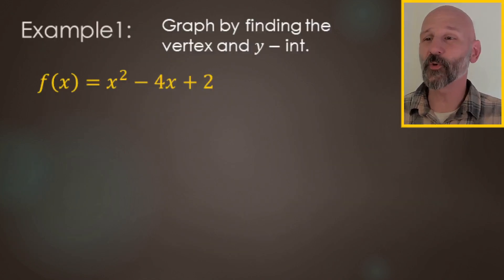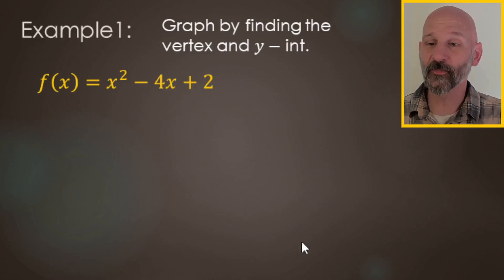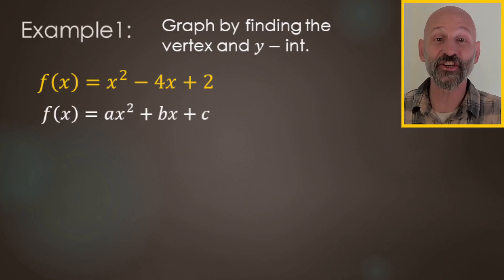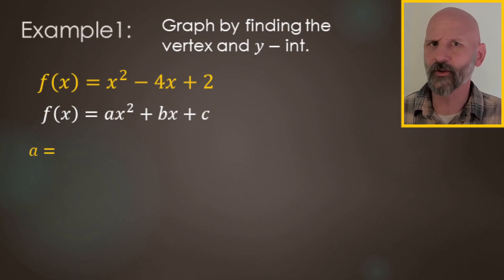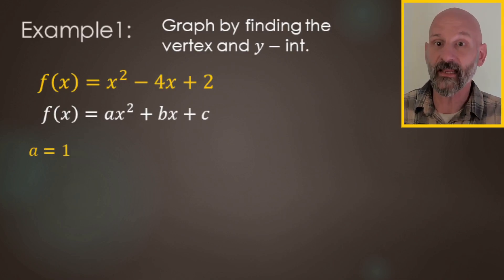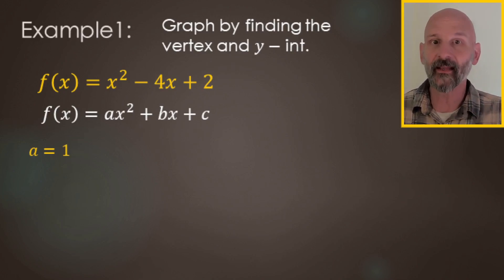Now let's get into some graphing. We have f(x) = x² − 4x + 2. This takes the general form ax² + bx + c. For the value of 'a': how many x-squareds are there? There's only one, so a equals 1. Even though you don't write a one in front of the x², you just need to know there's one of them, so the a value is 1.